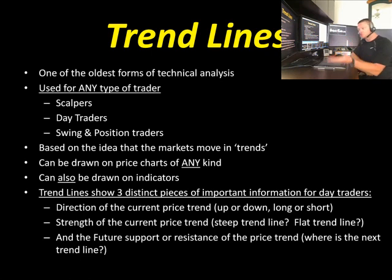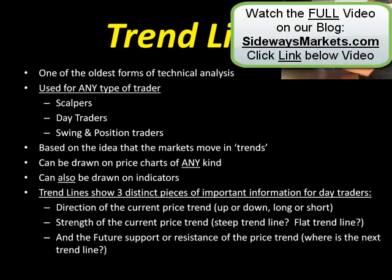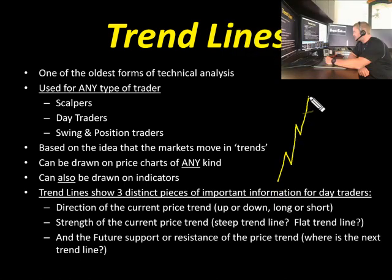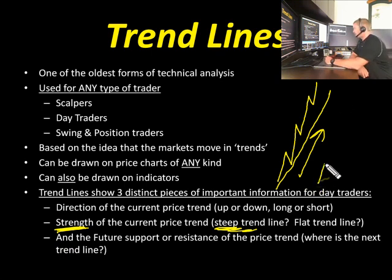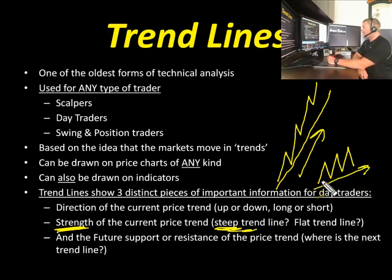The second thing is the strength of the current price trend. If I have a real steep trend line, that steep trend line will tell me the strength of the current trend. Whereas if I had a trend line with a shallow slope, that would tell me the trend was not as strong. The slope of my trend line will tell me the strength of the current price trend.